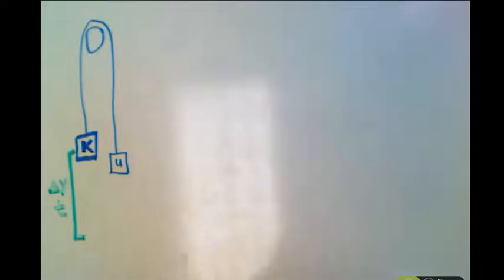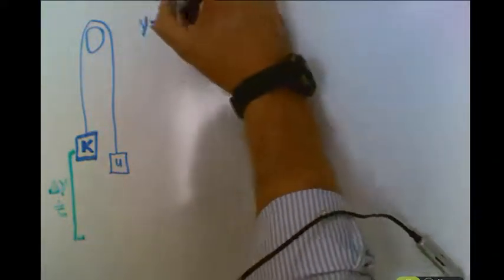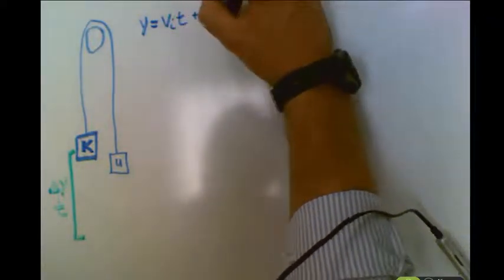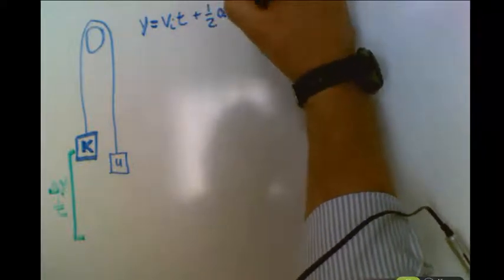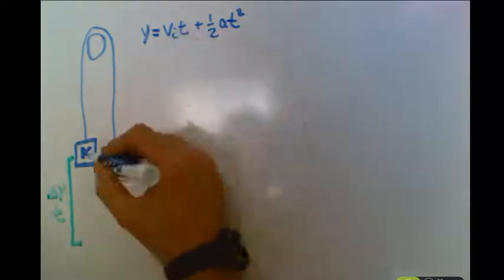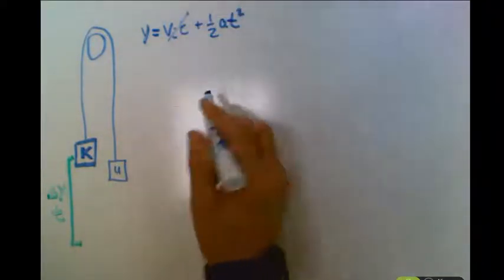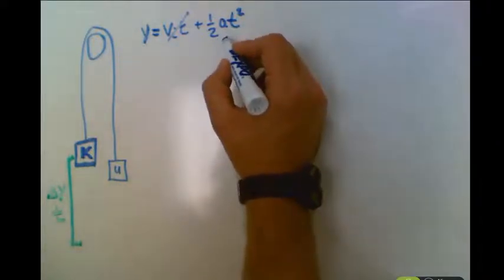Once we've got those two pieces of information, we can go and we can use our kinematic equation. Y equals V initial T, I know it's been a long time, plus one-half AT squared. We know that our initial velocity is zero because it starts from rest. So this is going to disappear. And we know Y, and we know T. So we can then solve for acceleration.